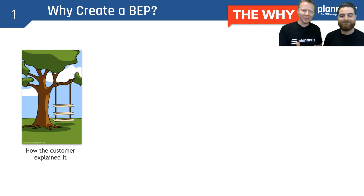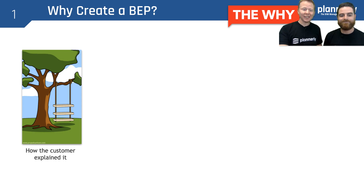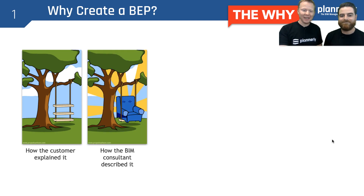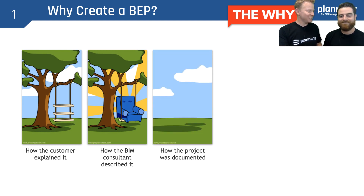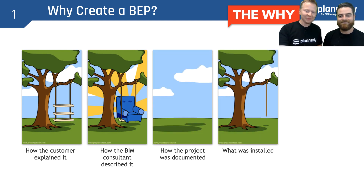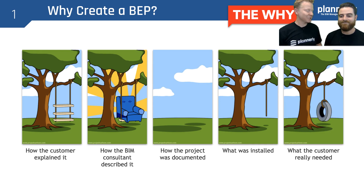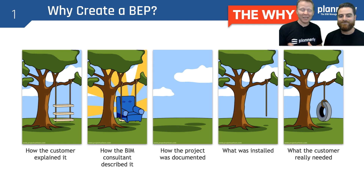We're going to borrow the project cartoon here and understand that sometimes people have different views. This one shows how the customer explained it, how the BIM consultant described it, how the project was actually documented, what was installed, and then what the customer really wanted — which was just a tire swing. This helps us understand the importance of having a BIM execution plan.